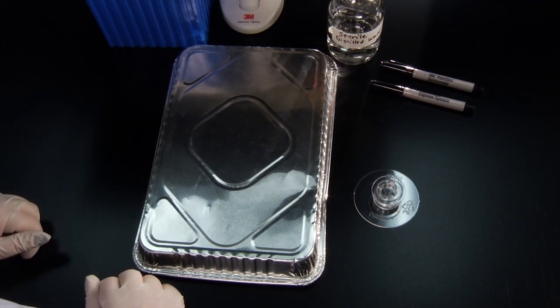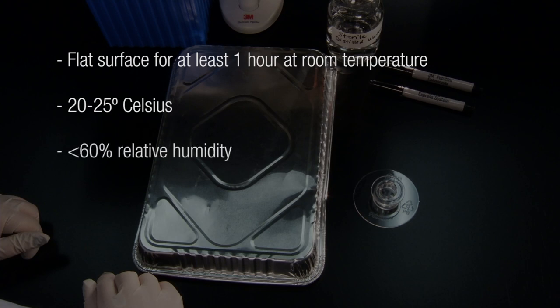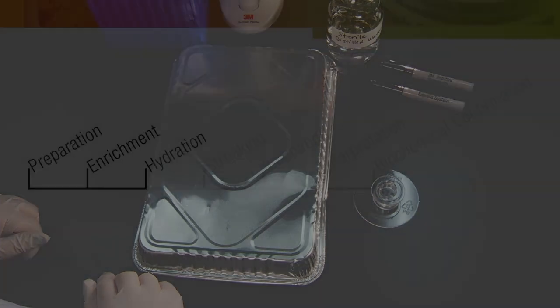Place the 3M PetriFilm Salmonella Express Plate on a flat surface for at least 1 hour at room temperature, 20 to 25 degrees Celsius and less than 60% relative humidity, protected from light to allow the gel to form. An aluminum foil tray is being used here.